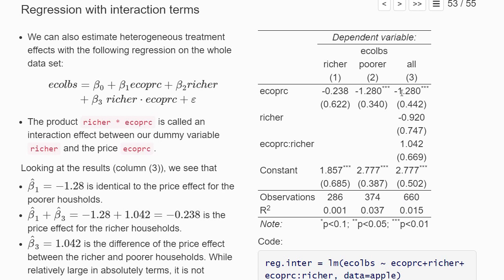So how can we think about this? So if we have a poorer household, this richer dummy is equal to zero. So basically this effect is zero and also the interaction term will be zero. So for a poorer household, we would predict that price increase changes the demand exactly by beta one, looking at our regression with the interaction effects. And so this term minus 2.8 is also exactly the same that we would estimate if we just look at the poorer households. So that's nice.